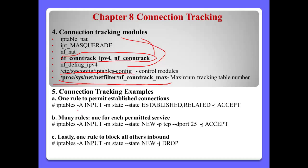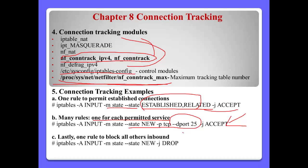Number 5: Connection tracking example. First, one rule to permit Established only — match state ESTABLISHED and RELATED, then permit. The second is manual rules, one for each permitted service. For example, using port 25 as SMTP — iptables INPUT state NEW, permit this service. The other NEW state connections will be prohibited or rejected.